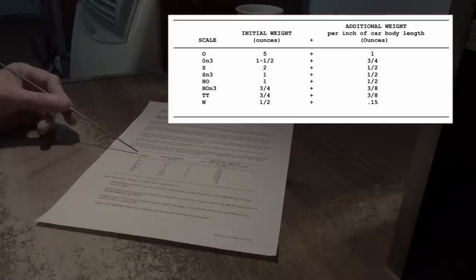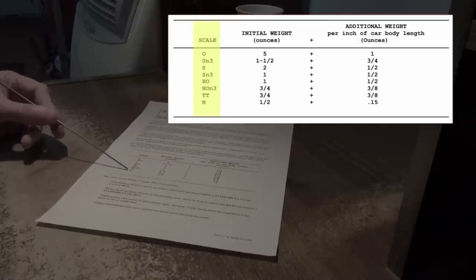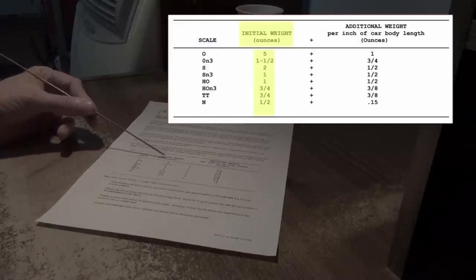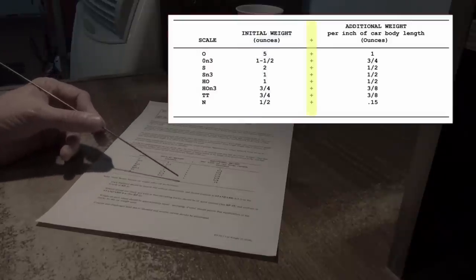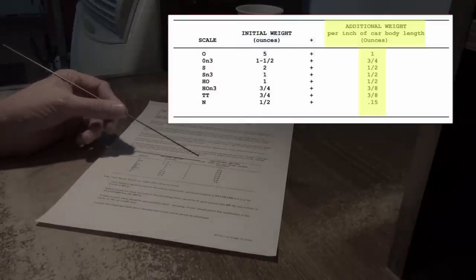The final part of this document making it so important is the table down below. This table is broken down into several key parts: scale in the first column, initial weight in ounces in the second column, simple addition in the third column, and the additional weight per inch of car body length in ounces in the fourth column. That table right there is the heart of this document and is the most important part to understand.